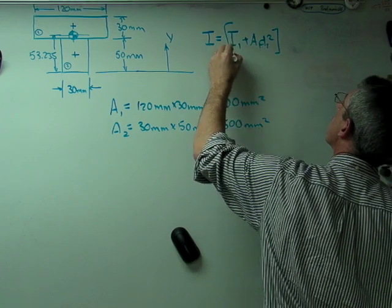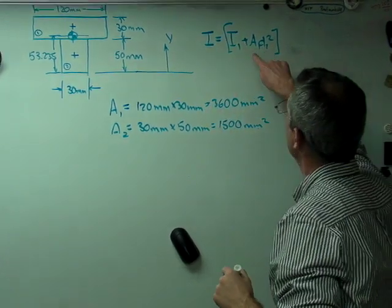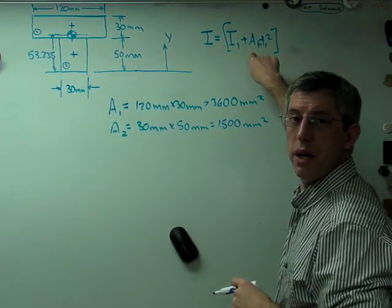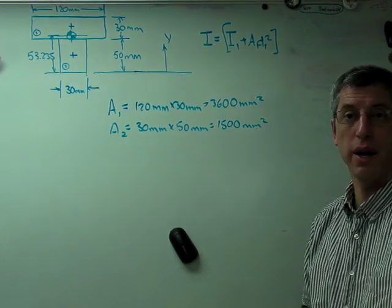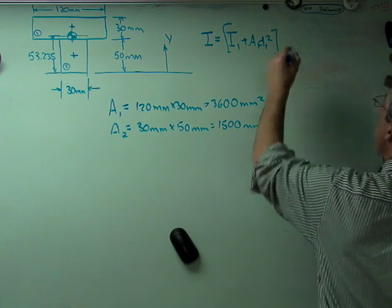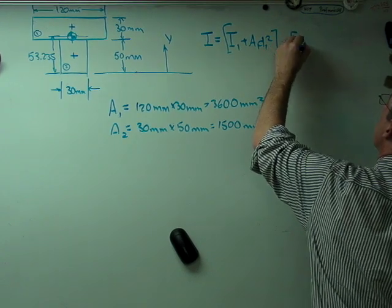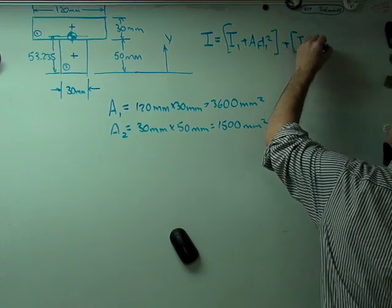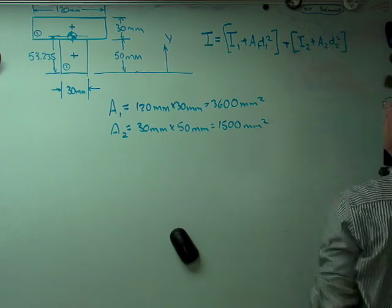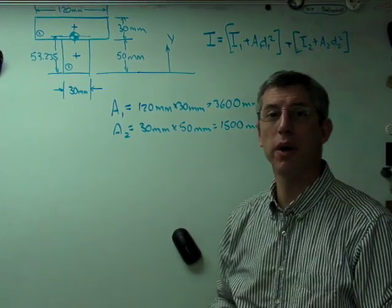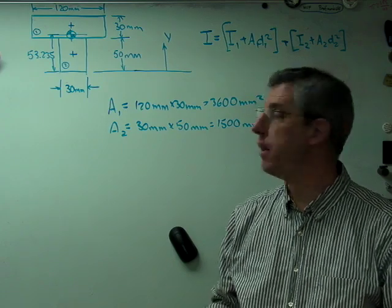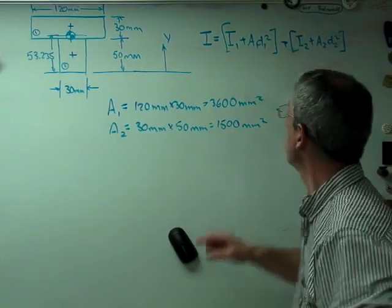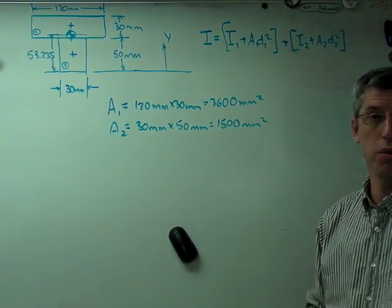Now the expression for area moment of inertia of the total composite shape is this. It's the area moment of inertia of box number one, plus this contribution that comes from the fact that box number one centroid does not lie on the centroid of the composite shape. And then I'm going to do the same thing for box number two. I've only got two expressions in brackets because I've only got two boxes. If there are more boxes, there's going to be more of these, but it's just more of the same.